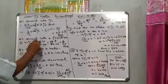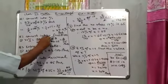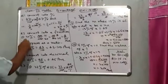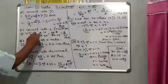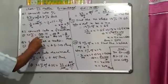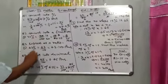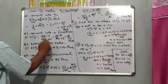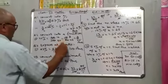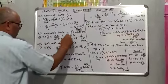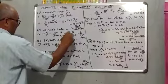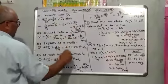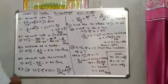Question number 2: Convert into a Fraction. First part: 32% will be equal to 32 upon 100, which simplifies to 16 upon 50, and further simplifies to 8 upon 25. That is the correct answer.